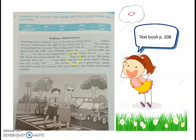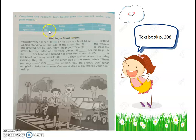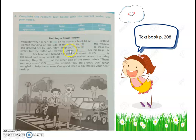Contohnya: 'Yesterday when Johan was on his way to school.' You cannot find 'was' in the list — yang ada itu 'be'. Past tense dari 'be' adalah 'was'. Jadi semua kata kerja ini nantinya kamu akan ganti ke dalam past tense dulu, baru dimasukkan ke dalam teks untuk melengkapi isi teks tersebut.